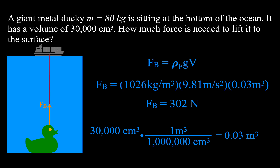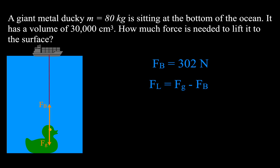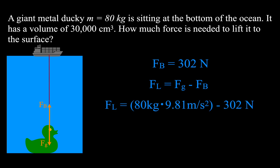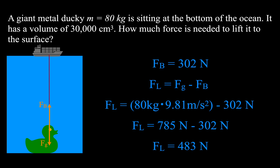That's not the end of the story — the ducky does weigh something outside the water. The force to lift it equals the weight (force of gravity) minus the buoyant force. We calculate the ducky's weight outside water as 80 kg × 9.81, then subtract the buoyant force of 302 N, giving 483 N needed to lift the ducky. Note: the buoyant force is constant regardless of depth, because the change in height across the ducky's body is always the same whether it's near the surface or at the bottom.